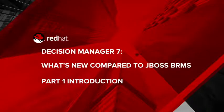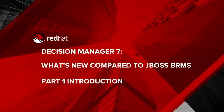Red Hat released Decision Manager 7.0 back in February 2018. Red Hat changed the product's name from Red Hat JBoss BRMS to Red Hat Decision Manager during this release. Many people are still confused by the name change. The objective of this series of videos is to clarify what Decision Manager is and what new capabilities it has over the older JBoss BRMS.